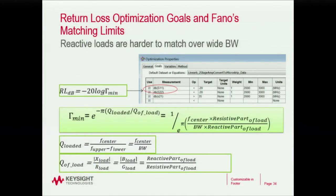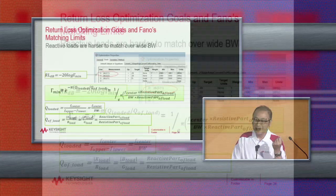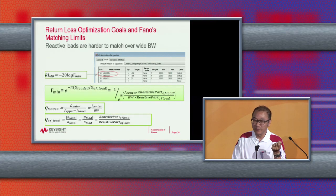We also need to be aware of Fano's matching limit. For reactive loads, there is a fundamental limit on how low a return loss you can achieve. It is determined by the loaded Q versus the Q of the load. The intuitive understanding is: the more reactive the load, the harder it is to match over a wide band, meaning the return loss will not be as low. This is all governed by Fano's limit.